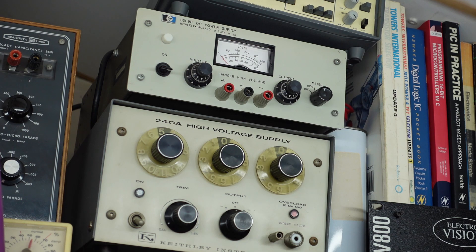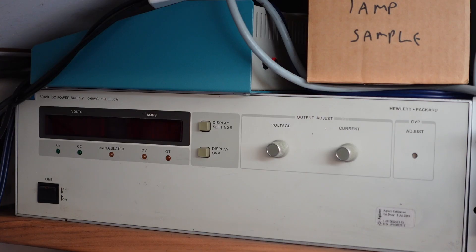Then I have this Keithley high voltage supply which gives 1200 volts on the very rare occasion you need to exceed even that. And hiding up the top is a bit of a monster—this is an HP 6012B. This is a thousand watt power supply which can go up to either 50 amps or 60 volts, not at the same time mind you.